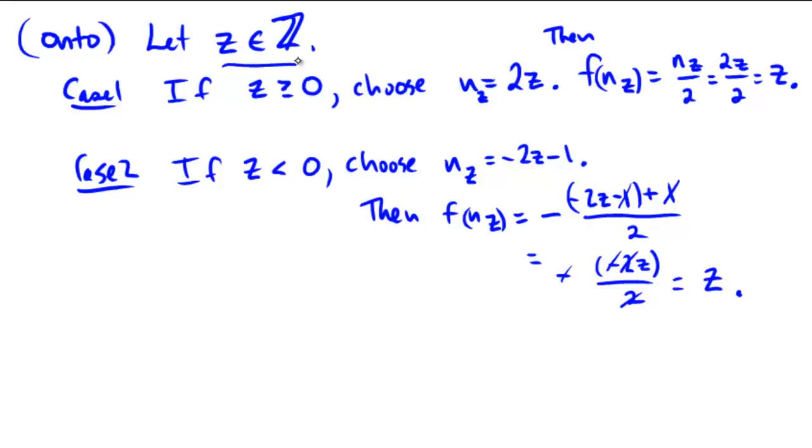z was an arbitrary element from the integers, and using arguments we were able to find a value that would be sent to z if z happened to be a non-negative number and an element that would be sent to z if z were a negative number. So in either case, we found natural numbers that would hit that particular integer. Therefore, this function is also onto, and this completes the proof.